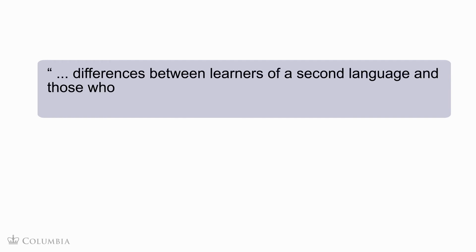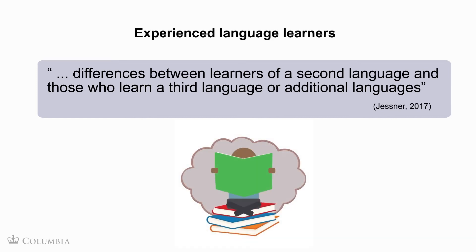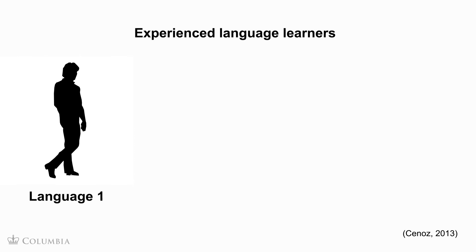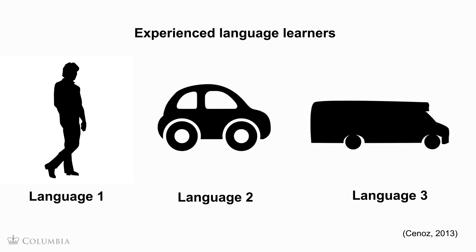In fact, there are differences between learners of a second language and those who learn a third language or additional languages. Third language learners are faster language learners because they are experienced language learners, and have already developed skills and strategies for learning a language. We can compare this experience to walking, then learning to drive a car, and then facing the challenge of driving a bus. The experience of driving a car involving specific skills and strategies can be extremely useful when driving another type of vehicle.